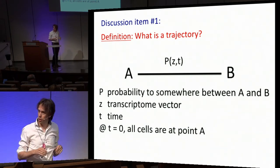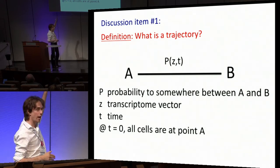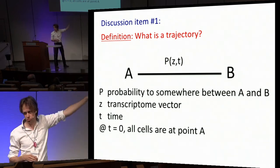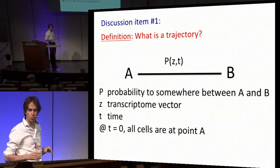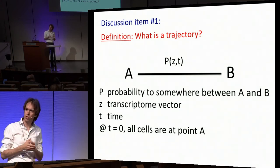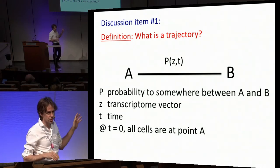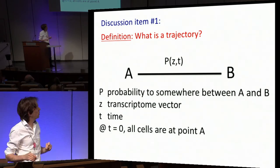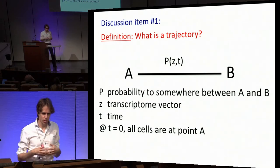Suppose at T equals zero, all the cells are in A — there would be a probability distribution with a delta function at Z equals zero. Over time, they leak to the other side. Some cells might immediately traverse in the first second to B, other ones would take two hours. This probability distribution captures all of that. This would be the more general way to think about trajectories, even though the challenge is it's not in one dimension — it's going to be in 6,000 dimensions.